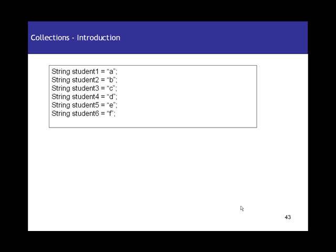Here I have taken an example where I have a class of 6 students, and I have declared all student names for those 6 students. So student 1 name is A, student 2 name is B, student 3 name is C, and so on. For 6 students I have taken 6 different variables and assigned values to them. This was pretty simple and not a lot of problem because this was only a class of 6 students.